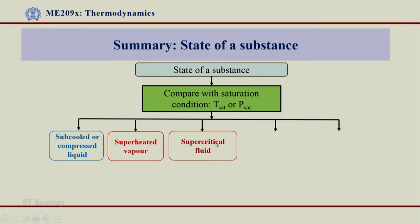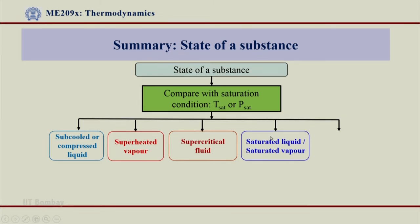Or if the temperature and pressures are beyond the critical limits, we could be in the supercritical fluid region, which we have seen earlier. Or if temperature is T_sat and pressure is P_sat, we could be on the saturated liquid or saturated vapor region — we know we are on the LV line. There is one more possibility: a two-phase mixture, when we have liquid plus vapor together.